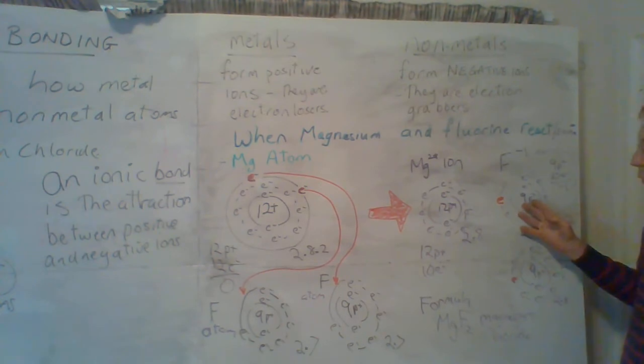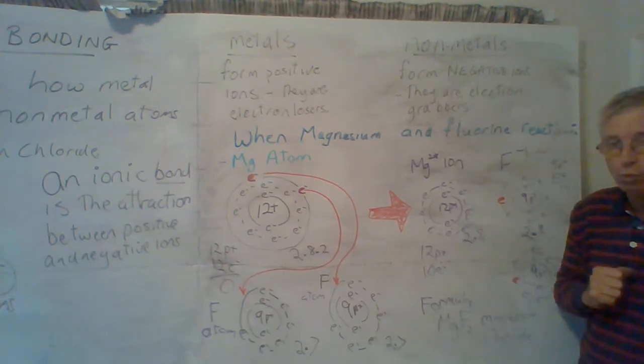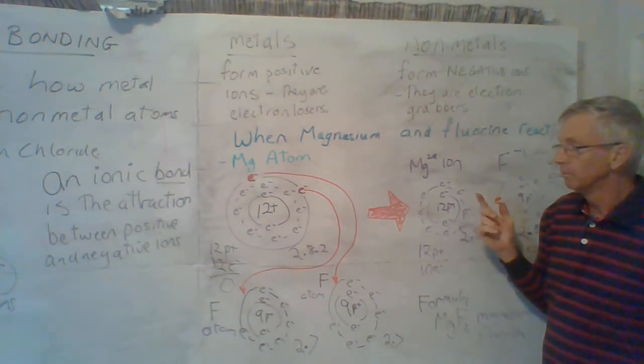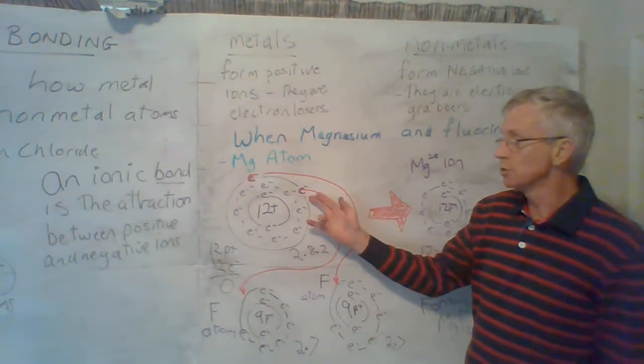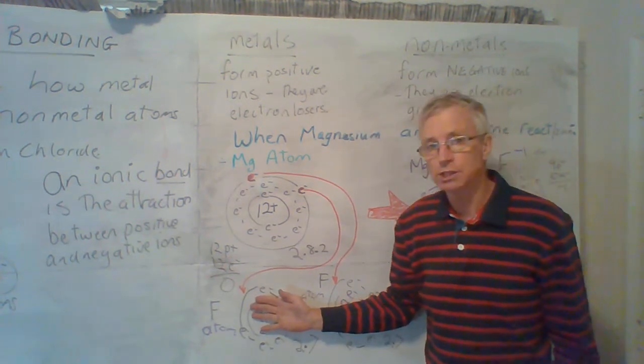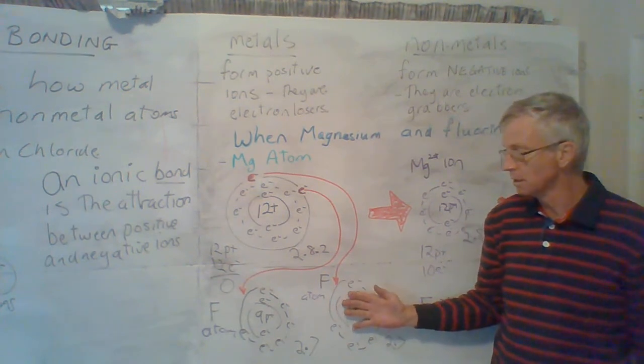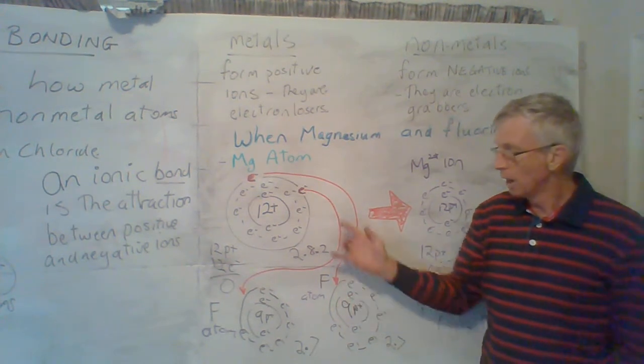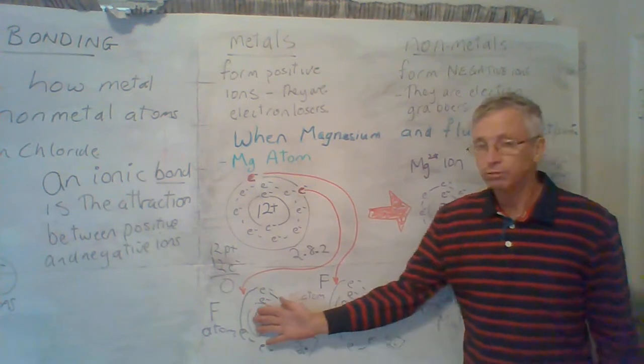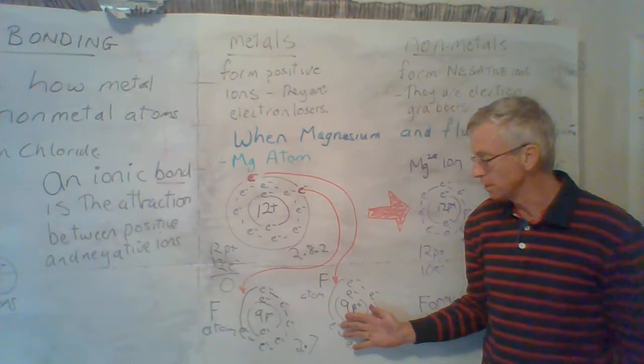If this was chlorine, the next one in the family, it would actually have 2.8.8, but it would actually have a full outer shell and it would also be a minus 1 ion. Now, the magnesium loses 2 electrons, but the fluorine only takes 1. So, in nature, when you burn magnesium in fluorine gas, what happens is that 2 fluorine atoms will grab an electron each.